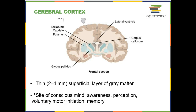Starting on the outside, just this outer layer — that thickness right there — that is the cerebral cortex: two to four millimeters of gray matter. This is where most of the conscious thought, perception, and conscious voluntary motor control originates in the cortex.